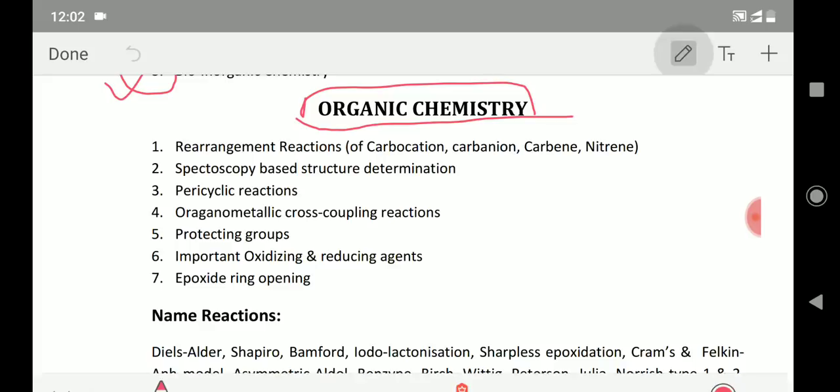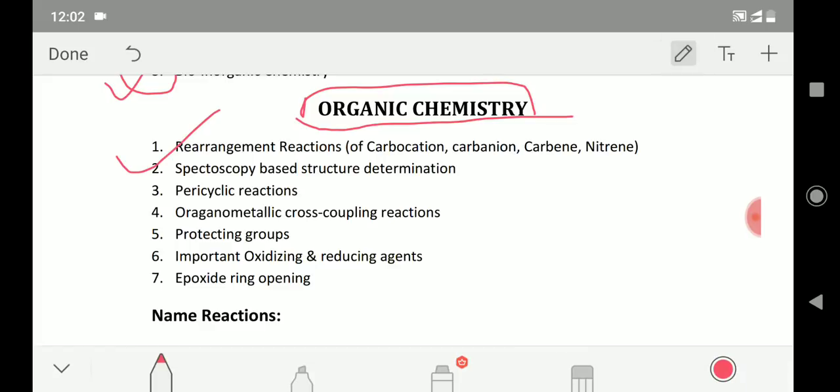These seven topics are very important: rearrangement reactions of carbocation, carbanion, carbene, and nitrene. There are a lot of name reactions you should revise once before the exam. Then spectroscopy-based structure determination. One question will always be there in the CSIR NET exam from this particular topic and there will be a four marker question.